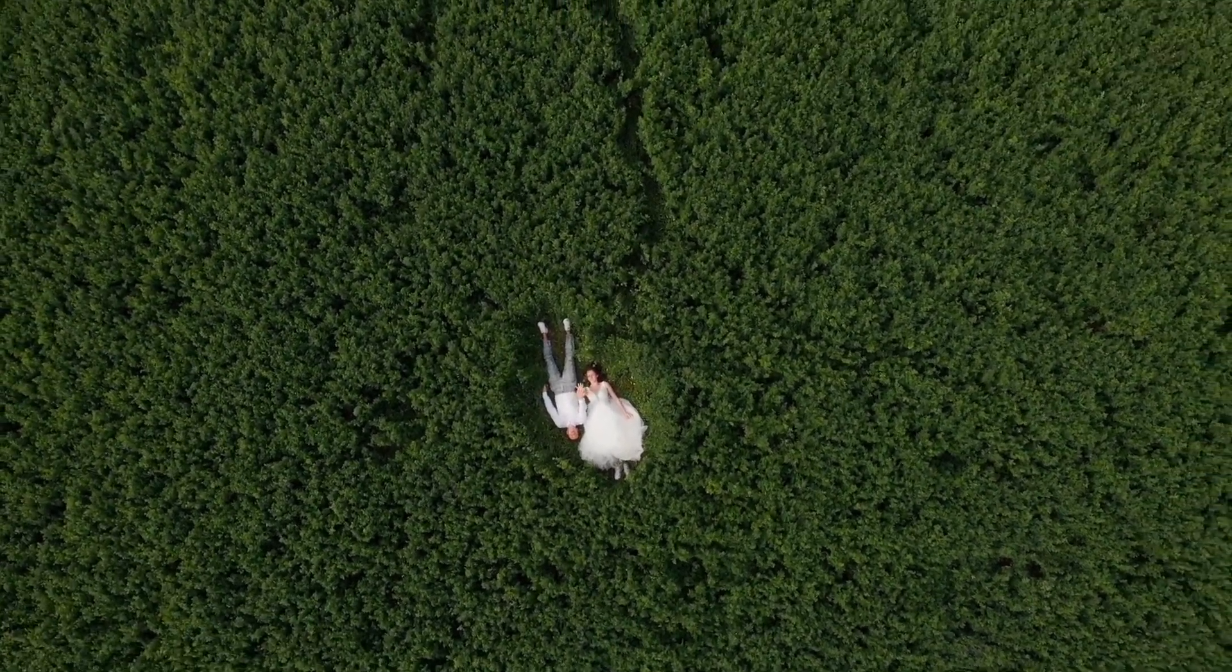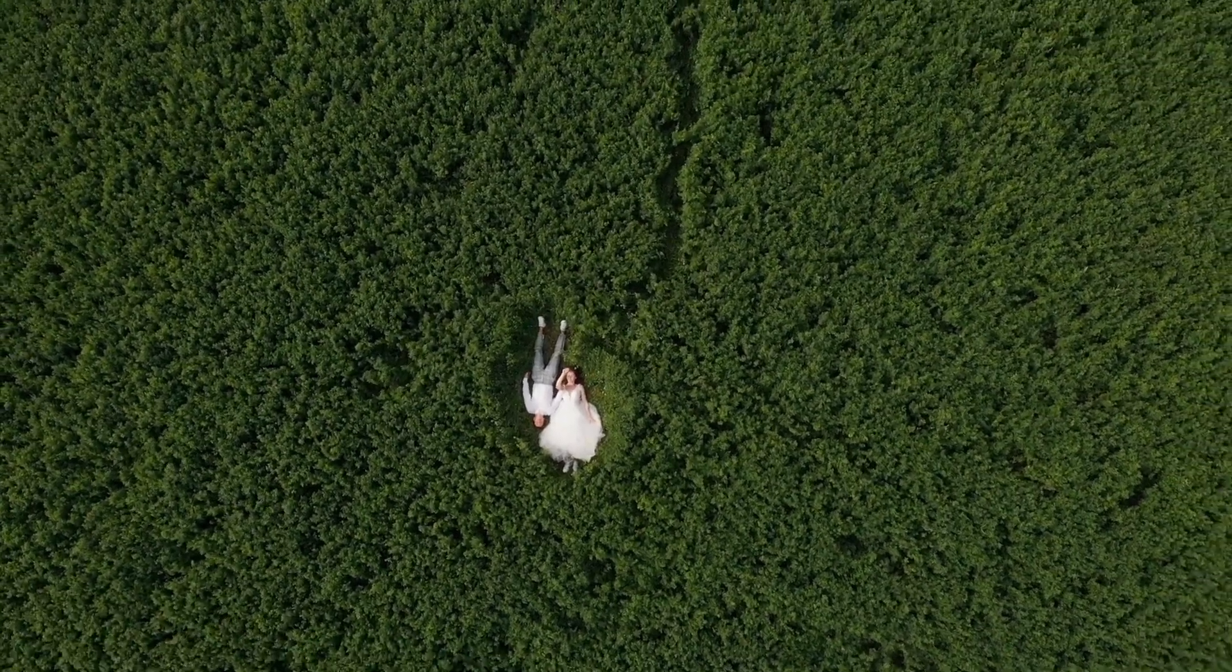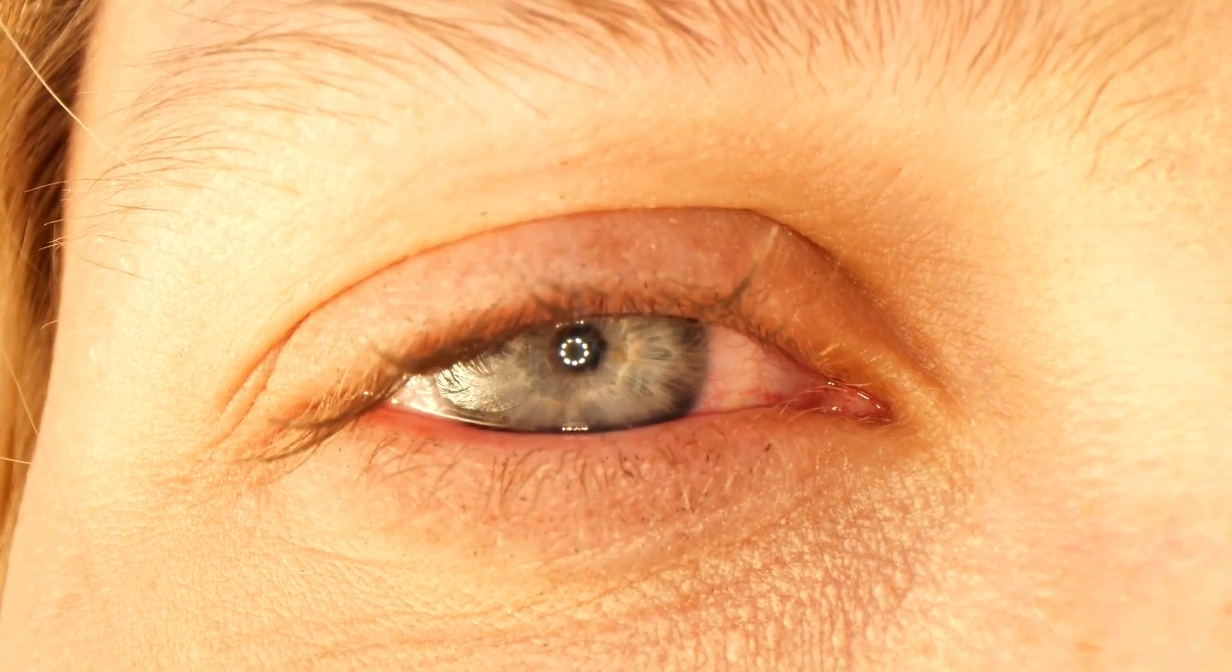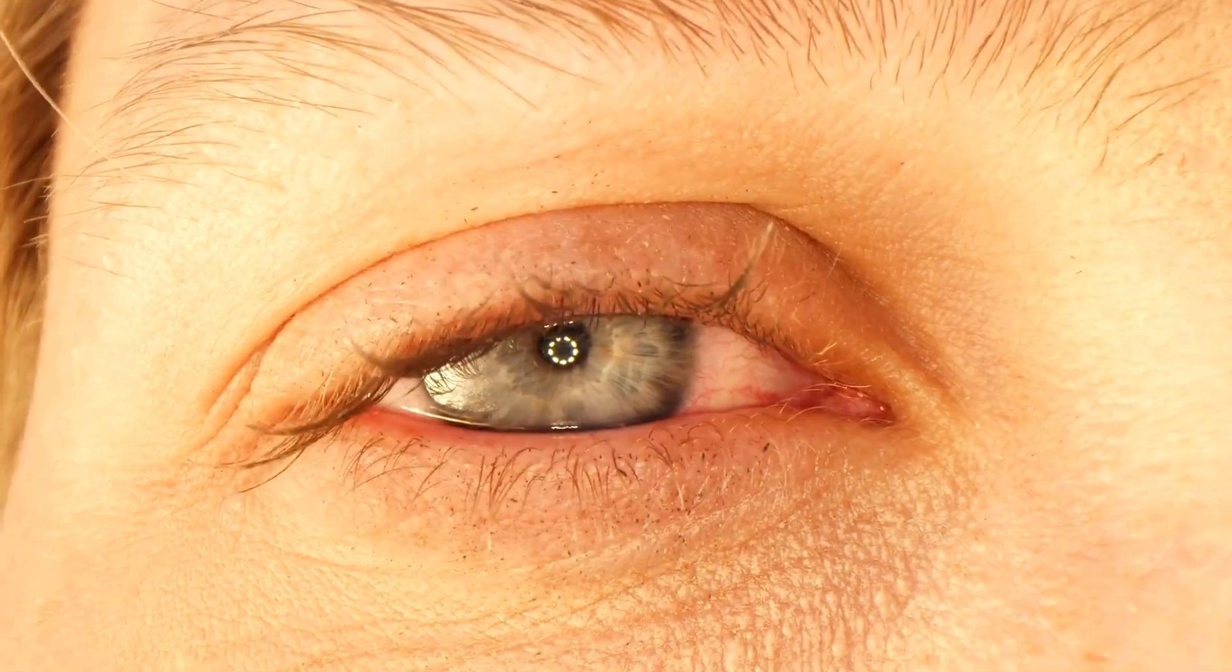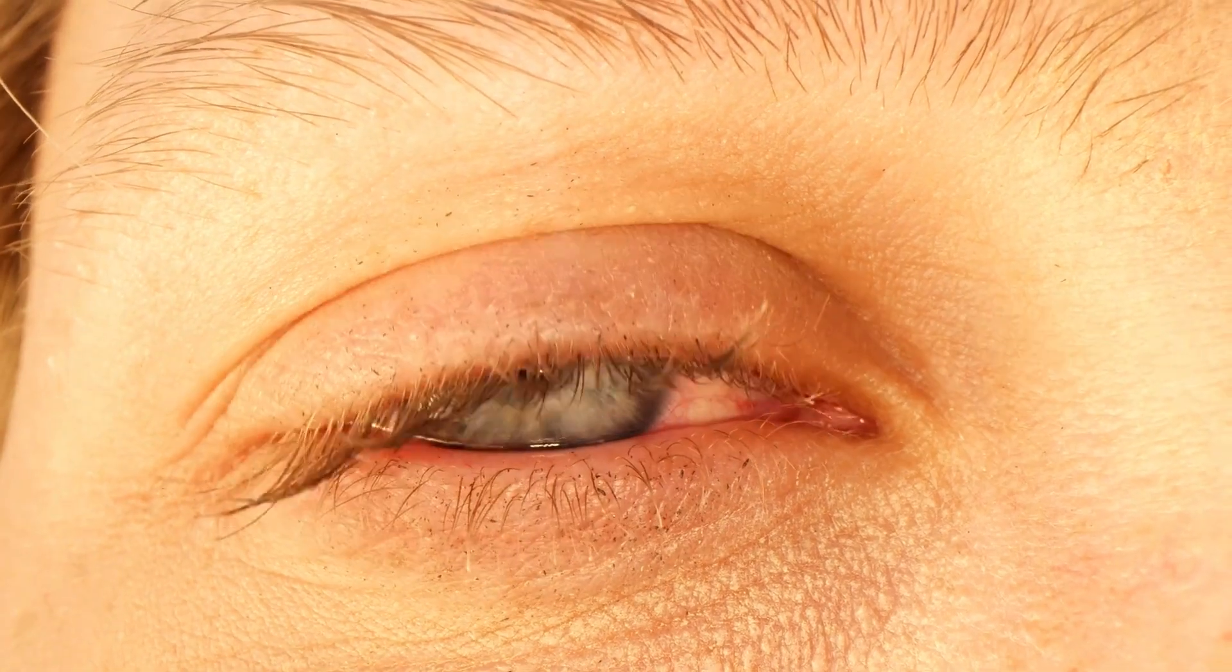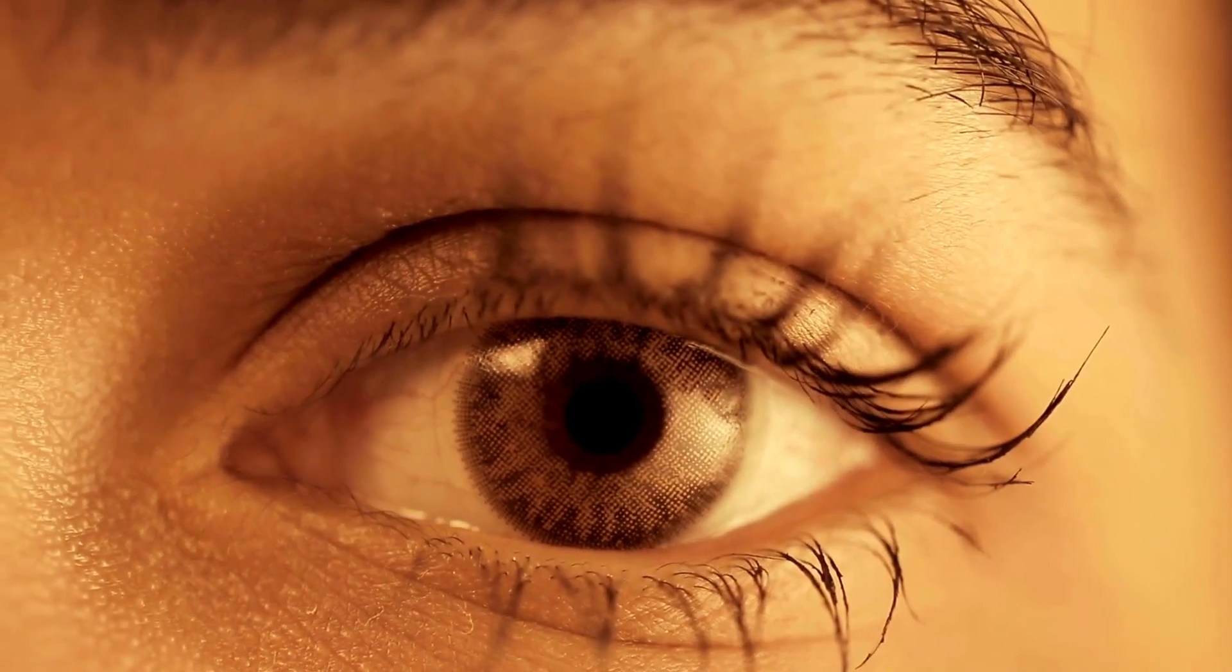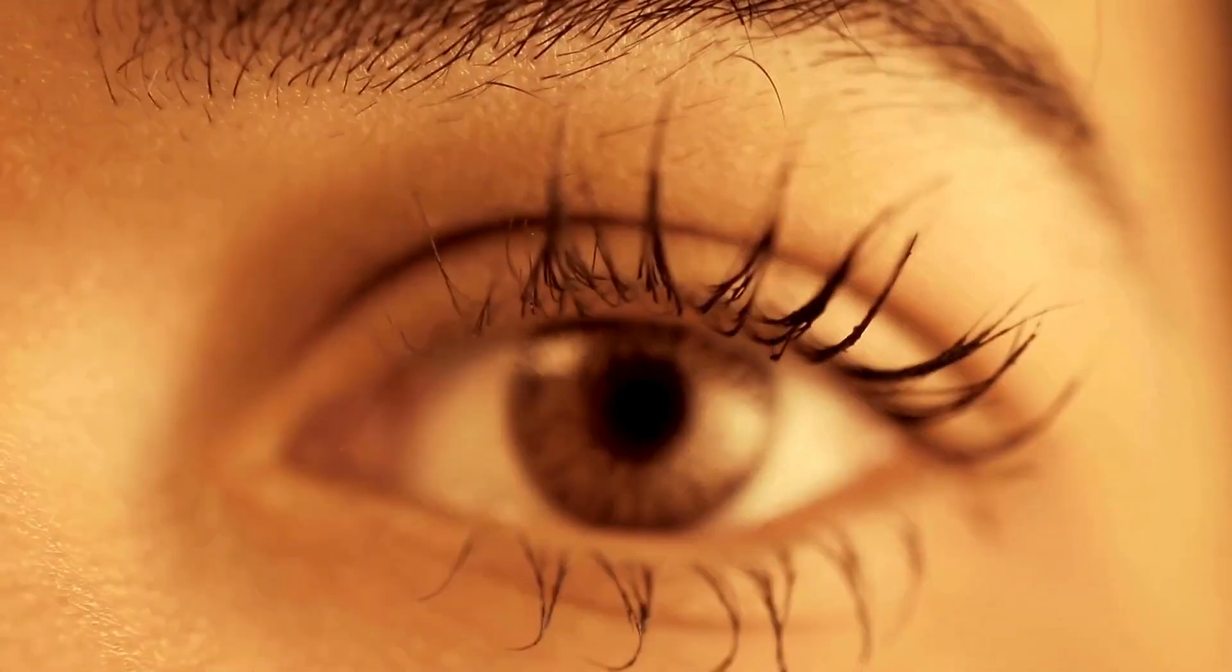This meat-generated image idea is really sticking with me. If what we see is so heavily influenced by our brains, what does that mean for how we experience the world? That's where things get really interesting, because if our visual reality is a construction, it raises all these questions about how much we can trust our memories, how we form judgments, even how we understand our own identities. It's like those studies that show how easily our memories can be manipulated or how our biases can shape what we see and remember.